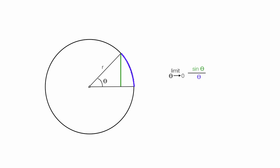As theta becomes small, notice what happens to the opposite side, the green line and the blue line which is the arc length. So as theta becomes smaller and smaller, approaches zero, this ratio approaches one.